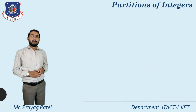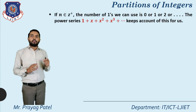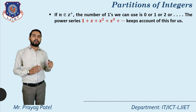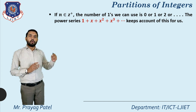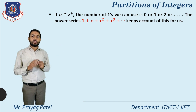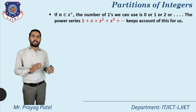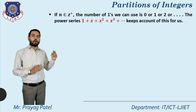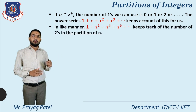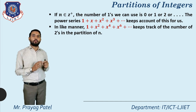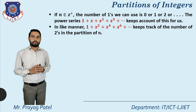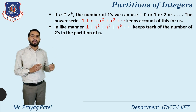For n belonging to Z+, the number of ones we can use is 0, 1, 2, or up to n. The power series 1 plus x plus x² plus x³ keeps account of this for us — it represents how many times 1 is repeated. For the second element, 2, in like manner 1 plus x² plus x⁴ plus x⁶ keeps track of the number of twos.